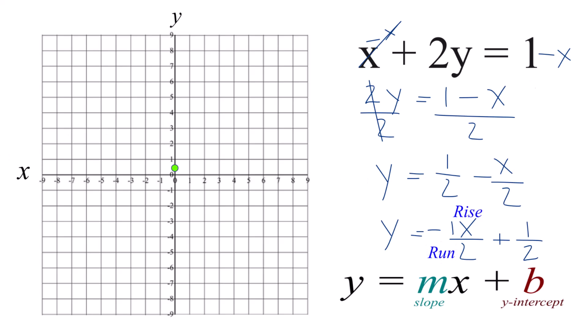So what we'll do, we'll go to this y-intercept here again, and we're going to rise negative 1, except it's negative so we have to go down. We don't go up. So we go right here and we go over 1, 2. We run 2.